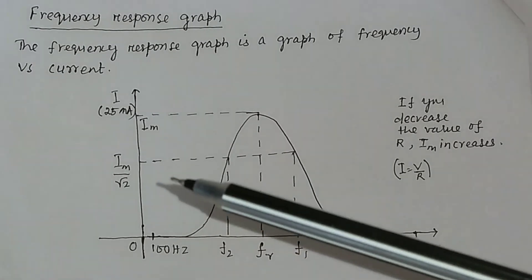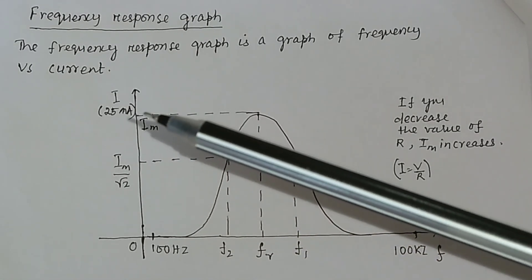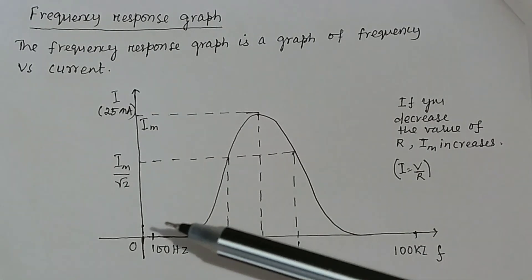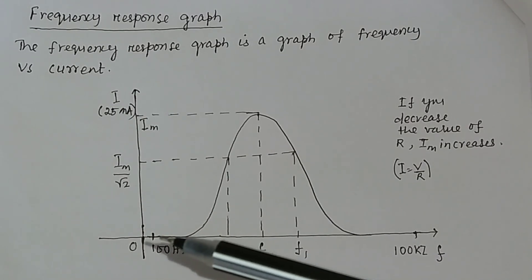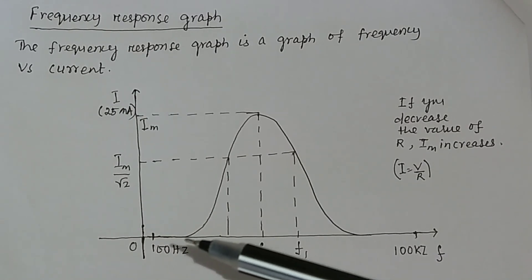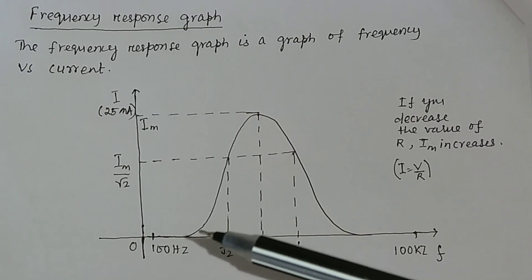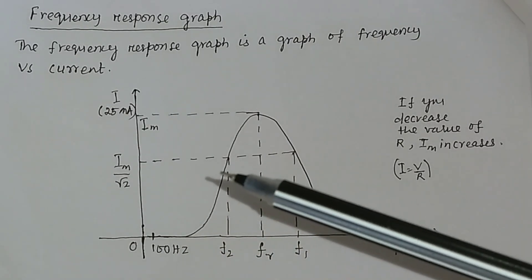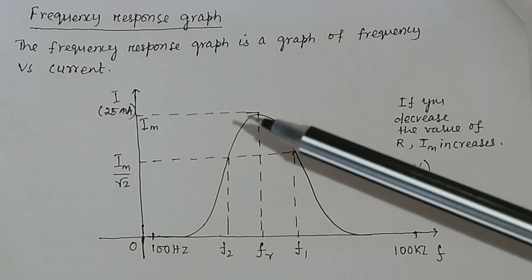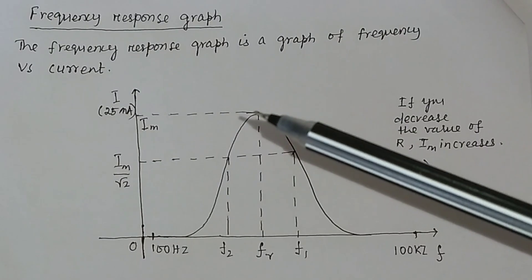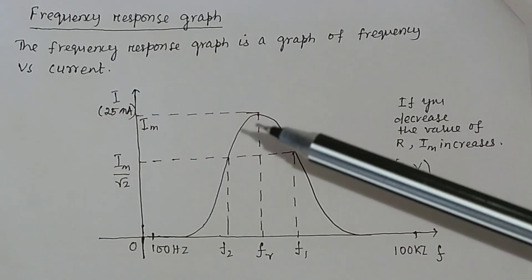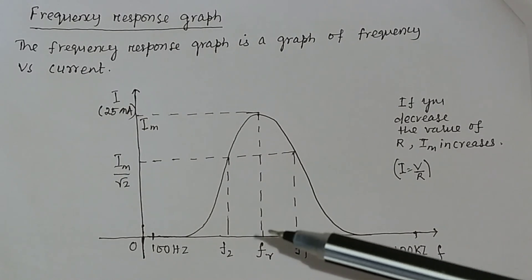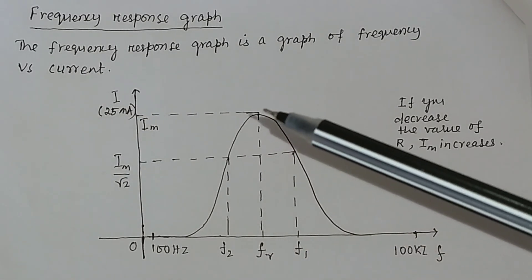The maximum current is 25 mA. In the experiment, when the frequency of the sine wave increases, the current will gradually increase. At a particular frequency, the current will be maximum — that is I_m — and that frequency is called the resonant frequency. At the resonant frequency, Xc will be equal to XL.